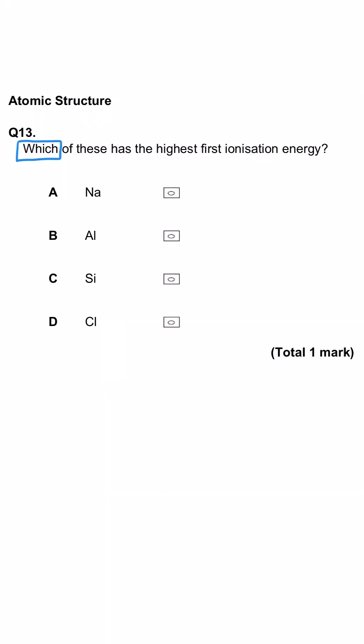Here, we're being asked which of these has the highest first ionization energy. First of all, it's important to ascertain that all four of these elements are in period 3. We need to remind ourselves that as we go across period 3, the ionization energy goes up. It's not a linear progression, it's a zigzag pattern.